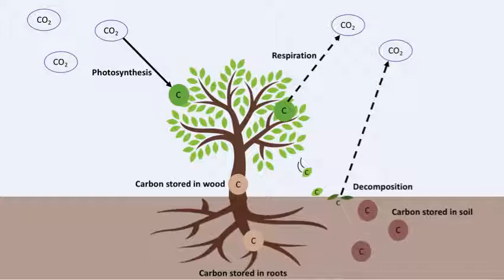When trees drop their branches and die, the carbon that has been stored in the trees then starts to break down. It doesn't usually go back up into the air. Instead, it becomes part of the soil in a process called decomposition. A little bit of that does go into the air, but not much — the rest just ends up building in the forest floor over time and becomes stored in the soil.